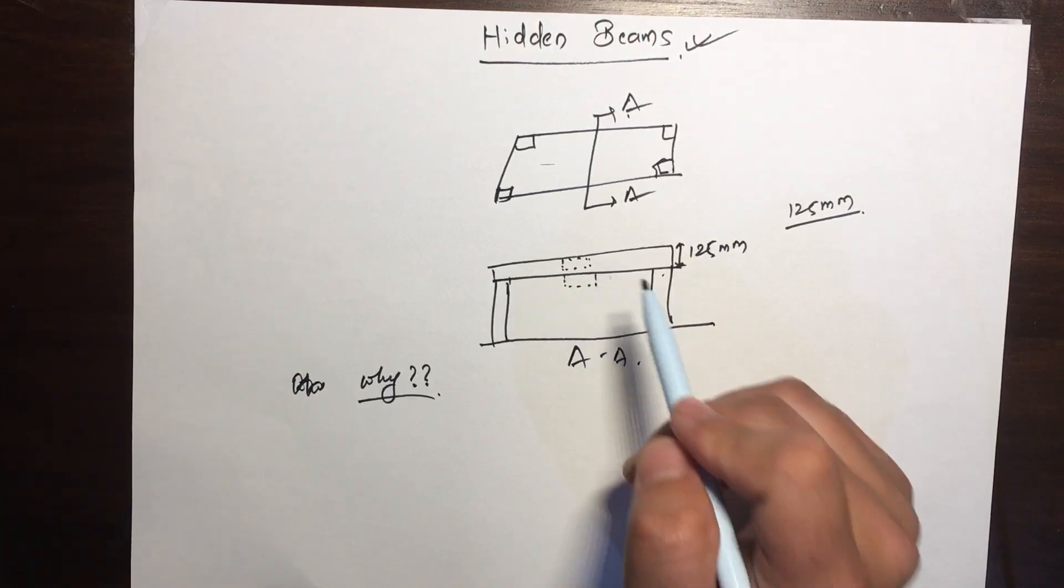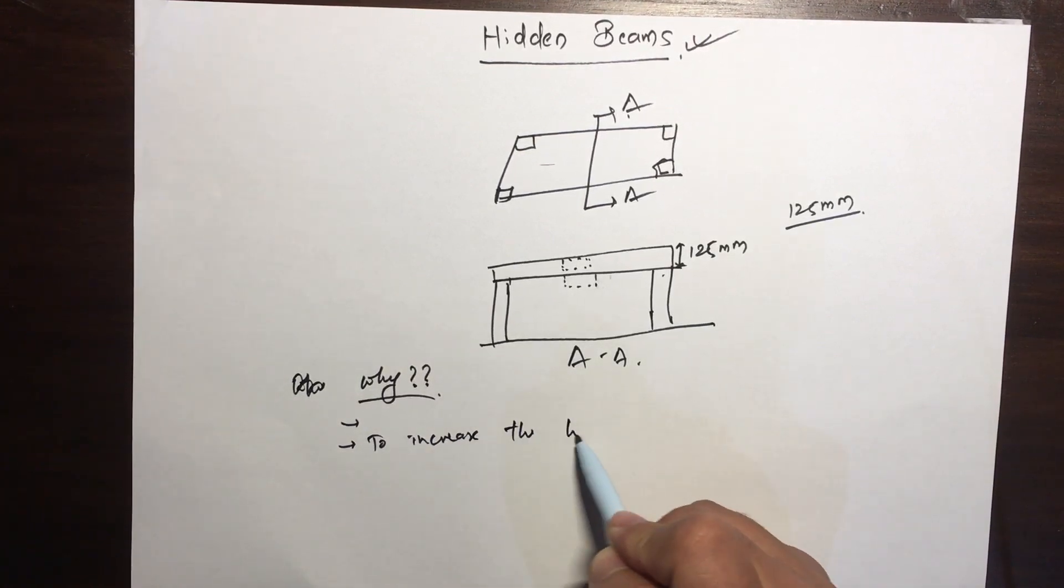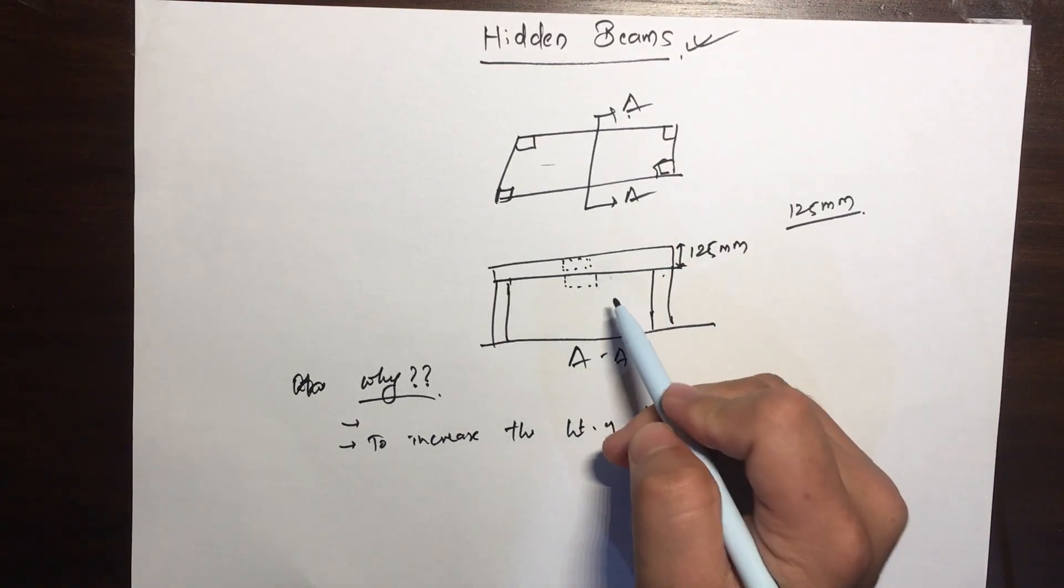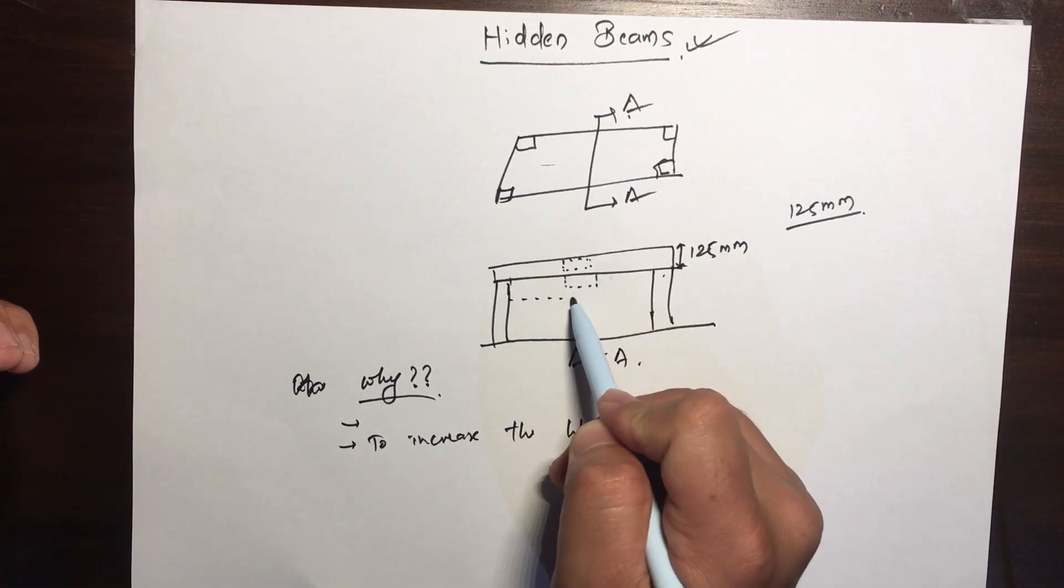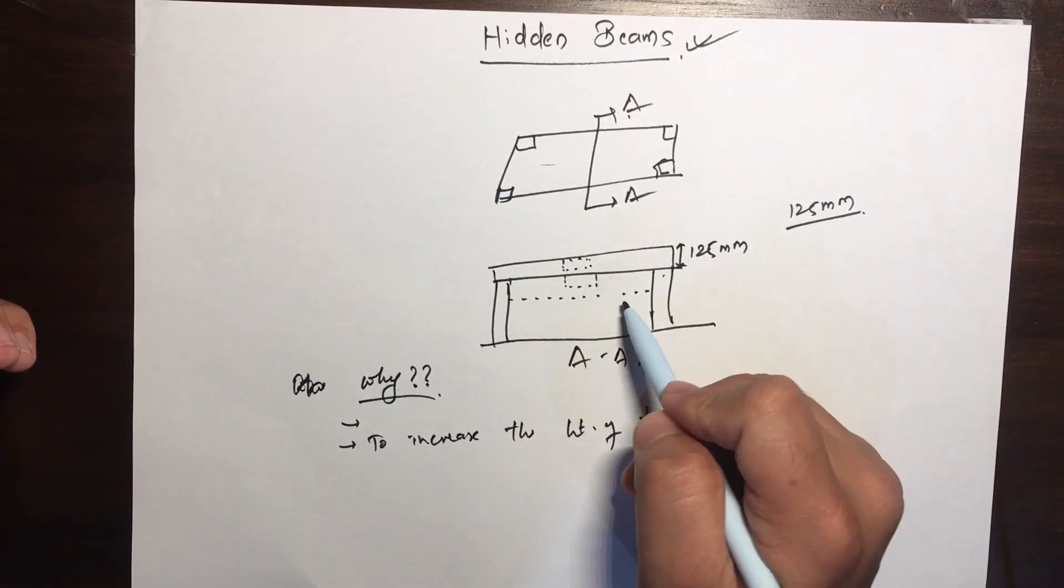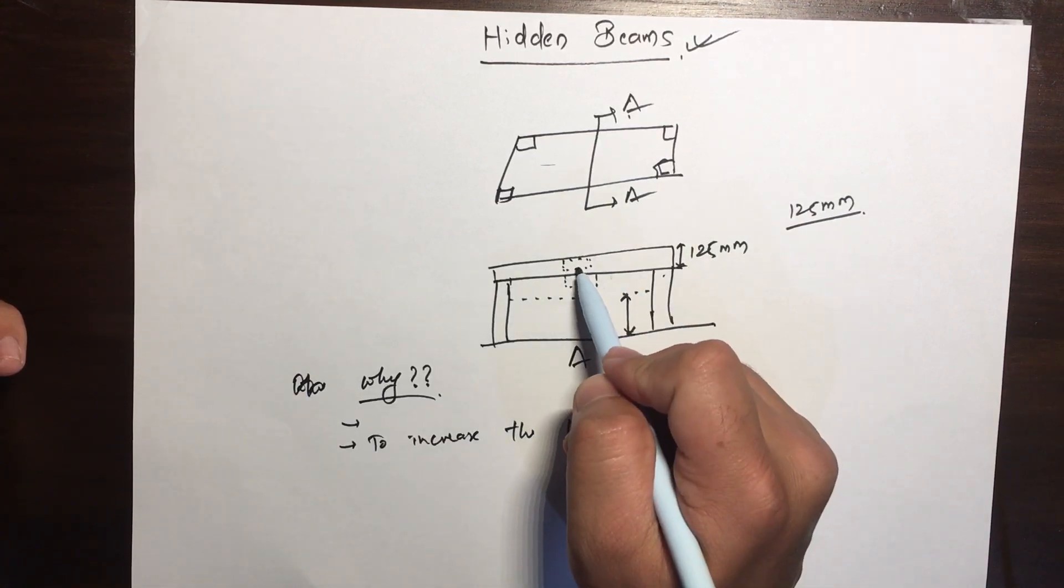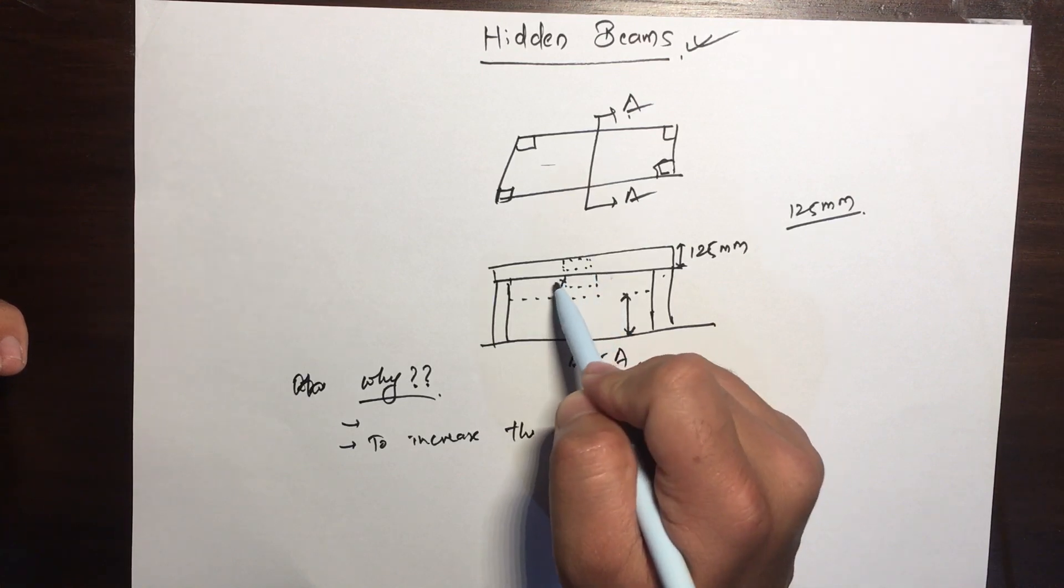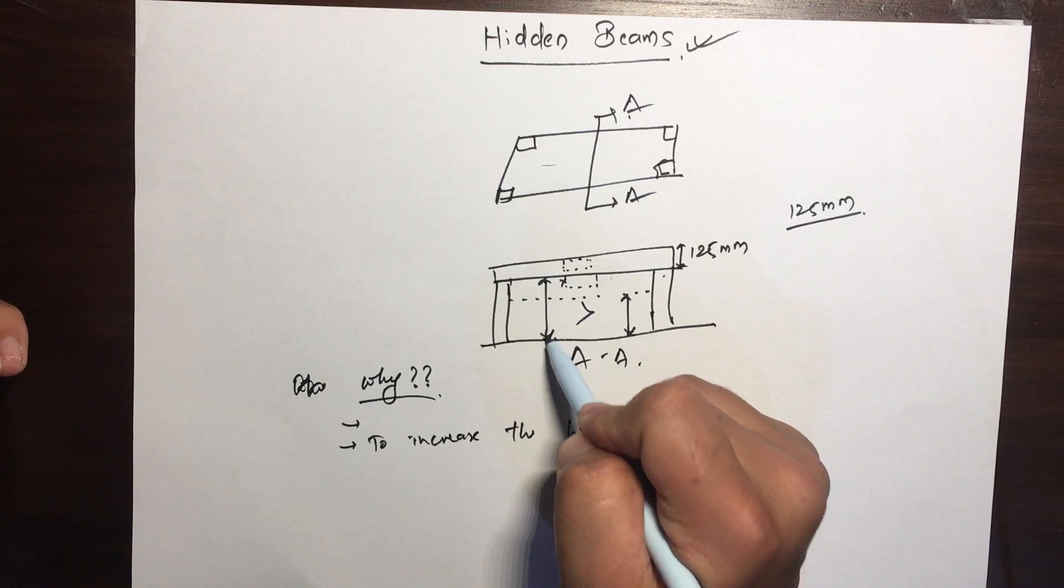What happens is that if you have a regular beam here and your false ceiling done in this position, then your floor height will be this. But if you have a concealed beam, you don't have this beam and you've got only the concealed beam, then your floor height will be this. This floor height is greater, so it increases the height of the room.